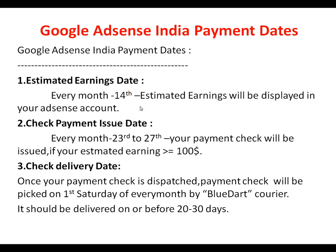Second, payment check issue date: every month from the 23rd to the 27th, your payment check will be issued, provided your estimated earnings for the previous month are greater than or equal to $100. If you earned less than $100, it will be added to the next month's earnings.